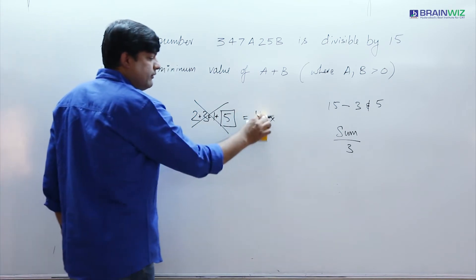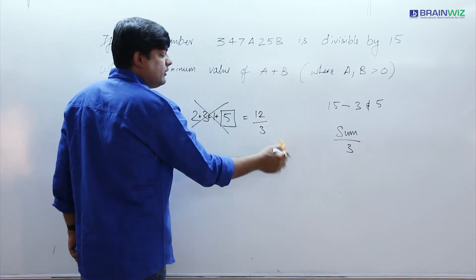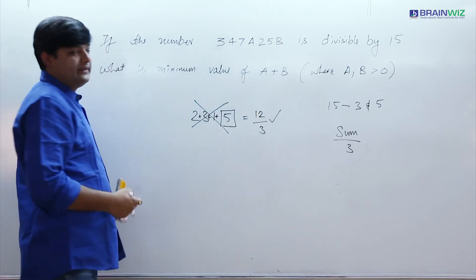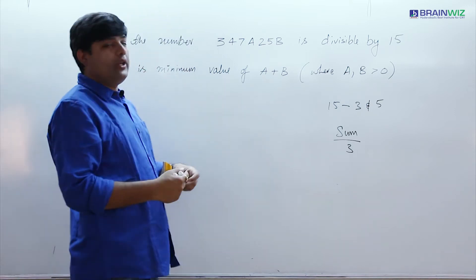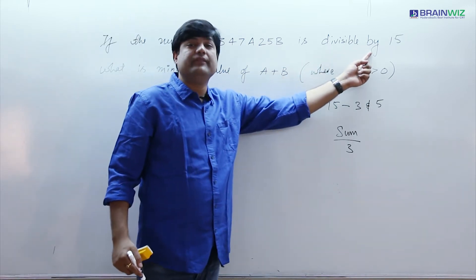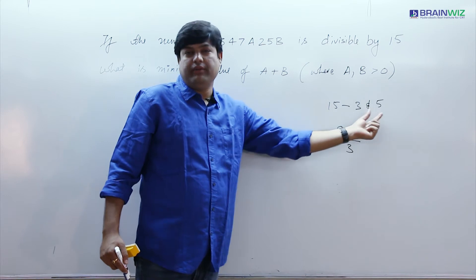If the sum is 12, definitely 12 is divisible by 3. Then this number is also divisible by 3. So we have to see two conditions in one question. That in order to be divisible by 15, it has to be divisible by 3 as well as 5.